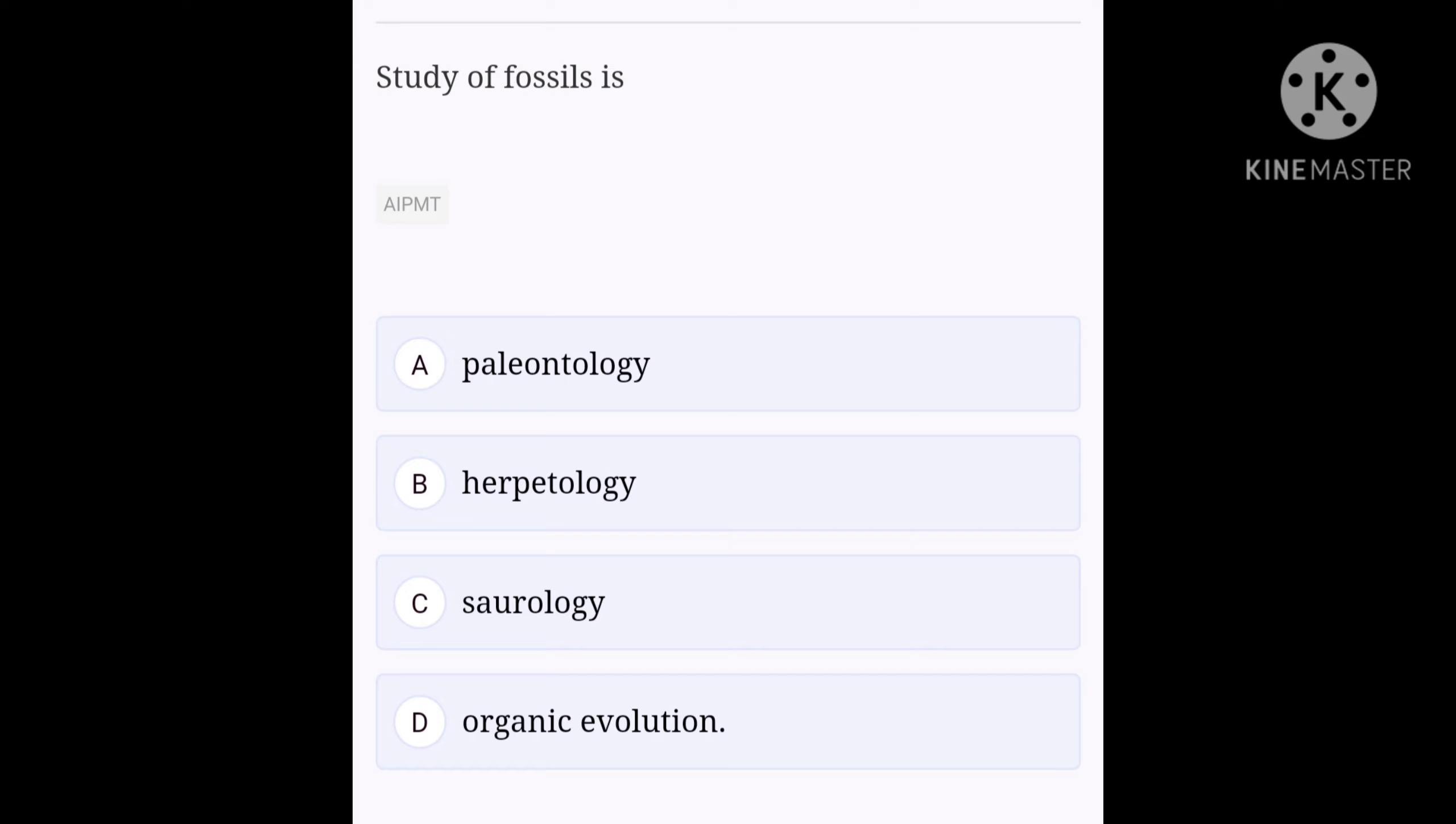Paleontology is the science or study of extinct organisms including their structure, environment, evolution, and distribution as revealed by their fossil remains. Herpetology is the study of reptiles and amphibians. Saurology is the study of snakes. Organic evolution deals with the study of origin of life and origin of new species. So the right answer for this question is A, paleontology.